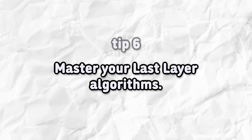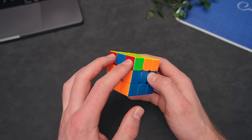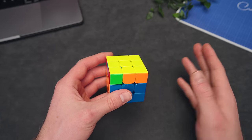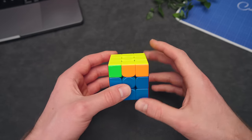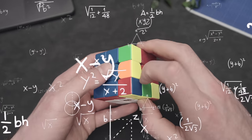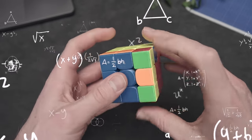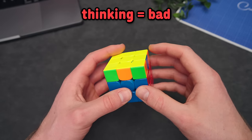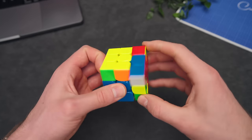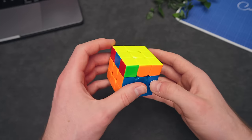Master your last layer algorithms. If I see headlights right now, I know I have to do a T perm. Now, initially we probably had to think about it like, okay, doing a sexy move, doing a sledgehammer, then keeping track of the pair right here. But you don't want to do this sort of thinking at all. If I say do a T perm, you'll be like, okay, and do a T perm just like that.